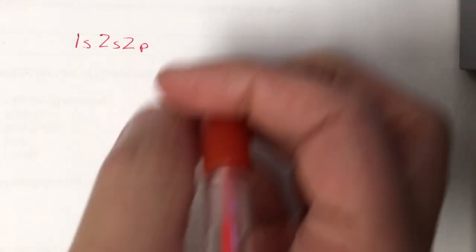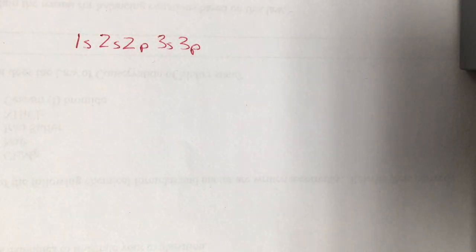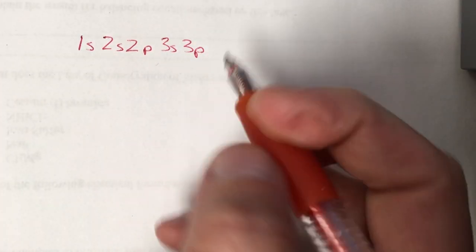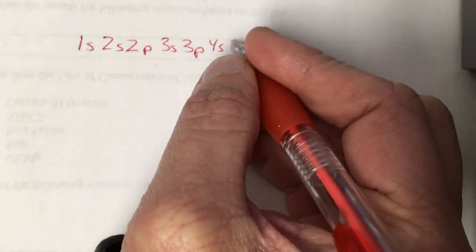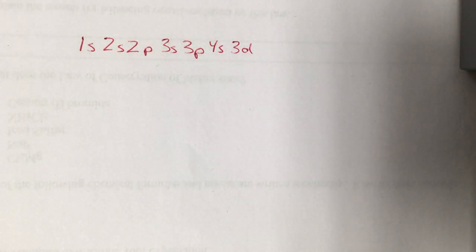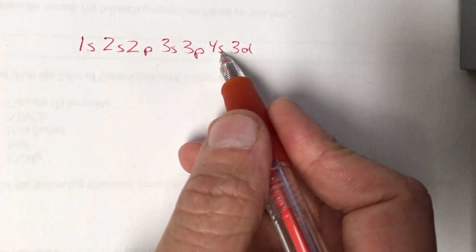So energy level 1 has nothing but an s orbital on it, so nothing but a 1s there. Level number 2 grows a little bit and has both s and p orbitals, so we have 2s and 2p. Level number 3 grows further still and has s, p's, and d's. 3s and 3p would be the next two orbitals in order. But we have to follow the Aufbau principle when dealing with the d orbital. It says the d orbital can't be filled until the s orbital on the next level has. So we can't just jump to 3d. We have to do 4s and then come back to 3d. At which point then we can pick up where we left off. We have 4s, so the next one up is 4p.